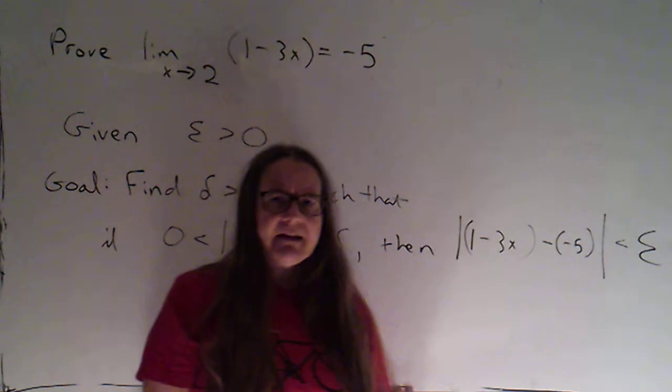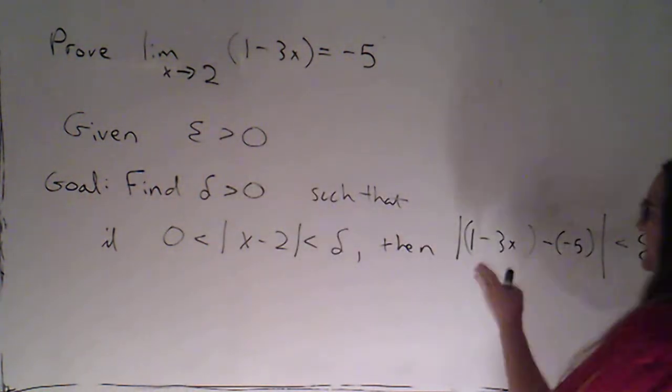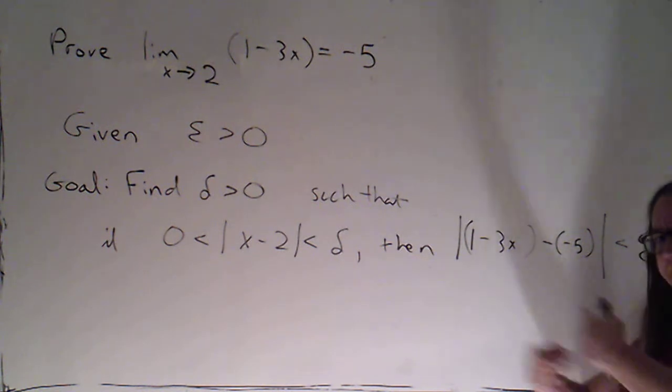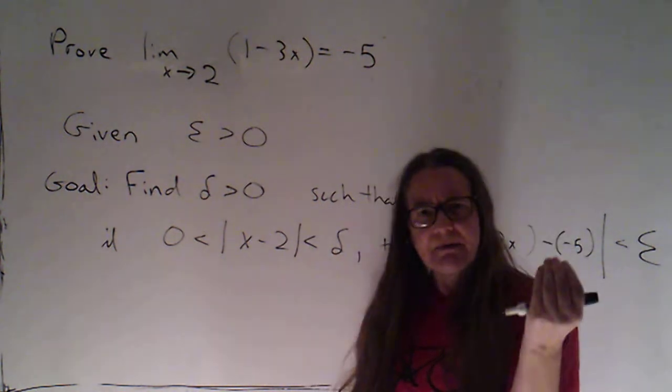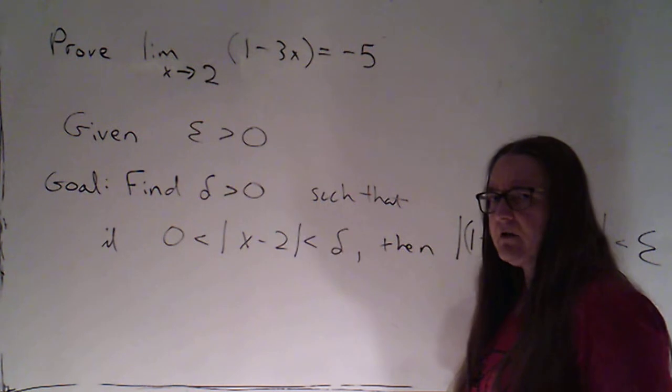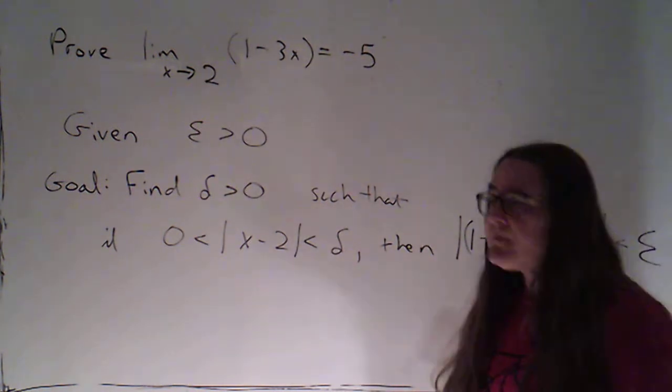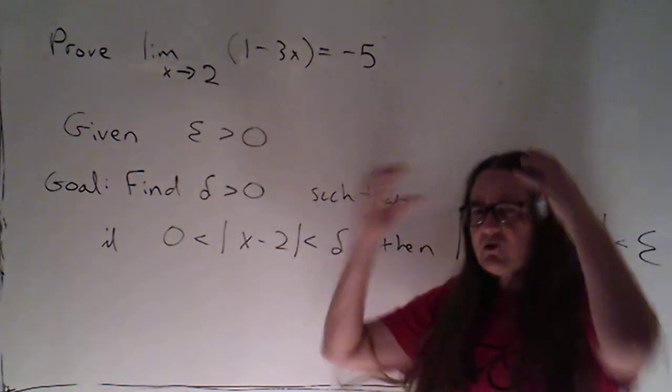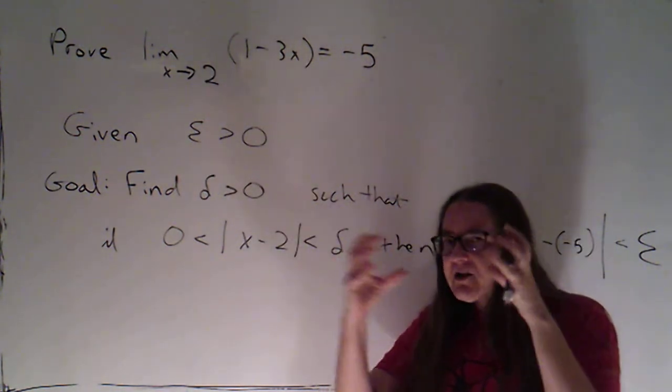But if you think about the work we did last time, we started with the epsilon, and we started with the epsilon inequality in order to figure out what our delta was. Because we knew more about that, because we had a specific number for epsilon. Now here, I don't have a specific number for epsilon, but my goal is going to be to try to describe delta in terms of that. So I want to think of it as if it's like I know what epsilon is, and I'm trying to work with that.